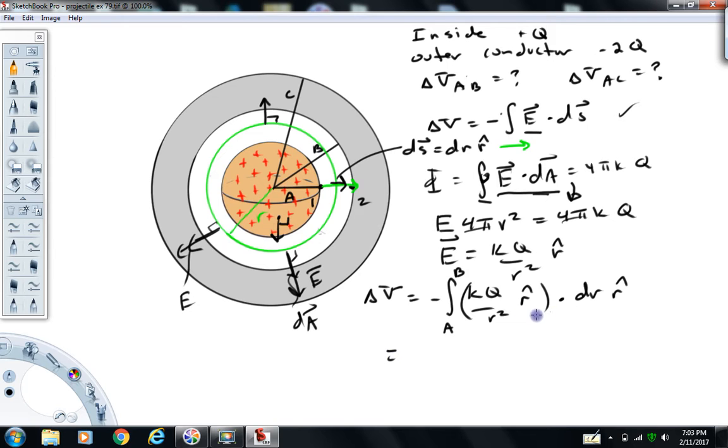Okay, now when we take two unit vectors in the same direction, basically you get one out of that dot product, so we end up with minus kq. These can come out in front. Then we have the integral of 1 over r squared dr. Let's see, that's going to integrate to minus 1 over r, evaluated a to b.